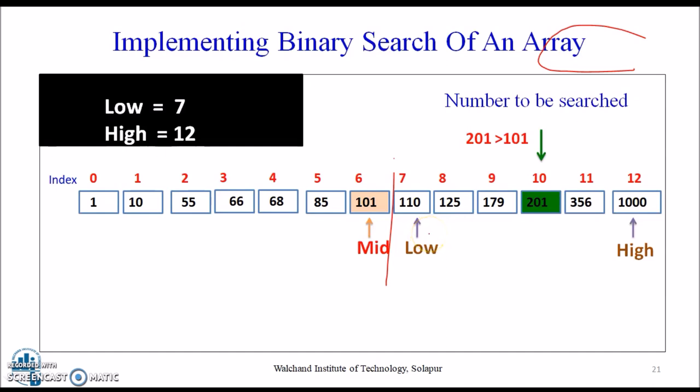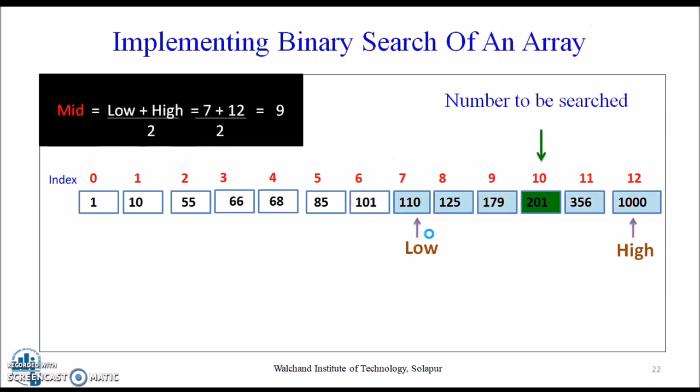So we change our low to mid plus 1 and find a new mid value again. Now our new mid is 9. We compare the value stored at location 9 with our target value, that is 201. The value stored at location 9 is not a match.